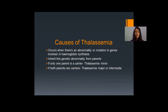Talking about the causes of thalassemia, it occurs when there is an abnormality or mutation in the genes involved in hemoglobin synthesis. It is inherited as a genetic abnormality from the parents. If the child receives the defective gene only from one parent, the condition is known as thalassemia minor. Generally, thalassemia minor patients do not exhibit signs and symptoms of the disease, but they remain as carriers and can transfer the defective gene to their second generation.